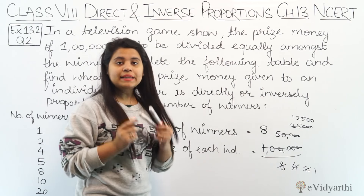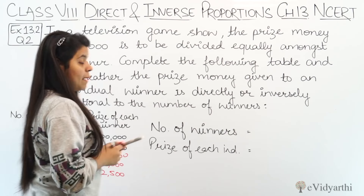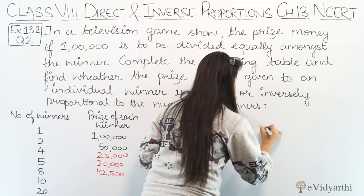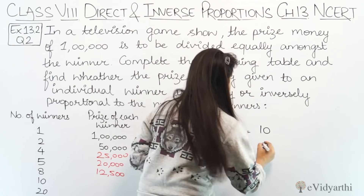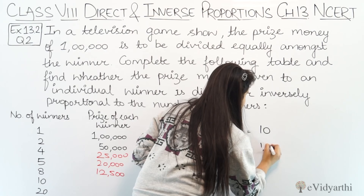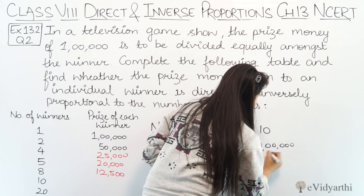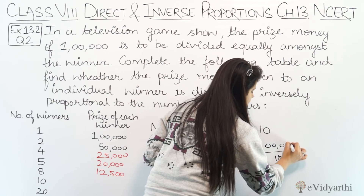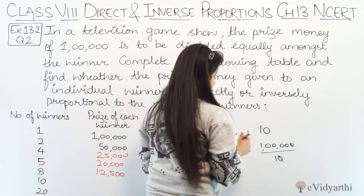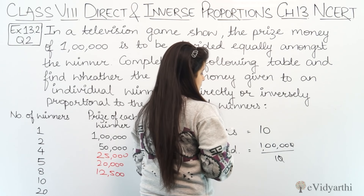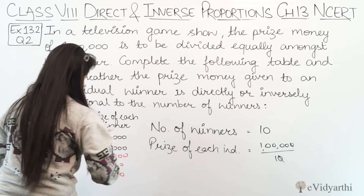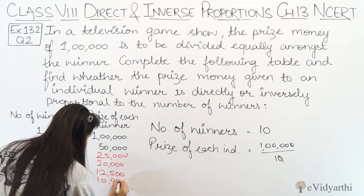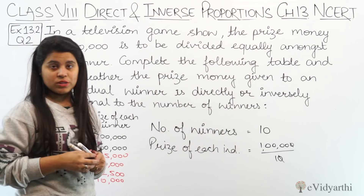Now let's come to the next one. Ab next hmare paas hai number of winners 10. Agar 10 logon mein distribute karna hai, the prize money is 1 lakh divided by 10 — hmare paas aa gaya 10,000. So agar 10 logon mein distribute hogi, to per person we'll get 10,000.